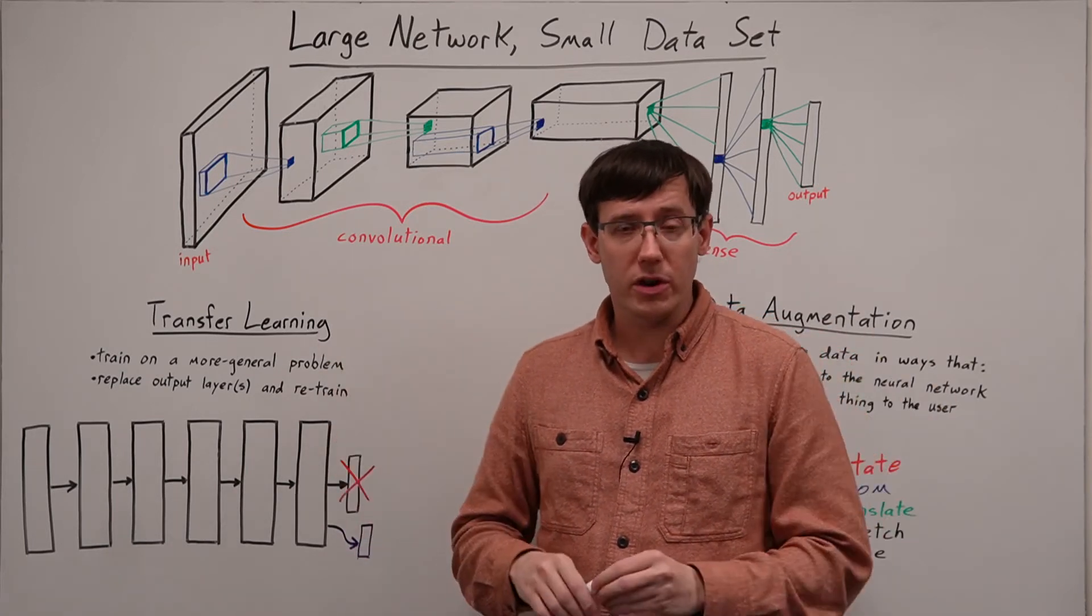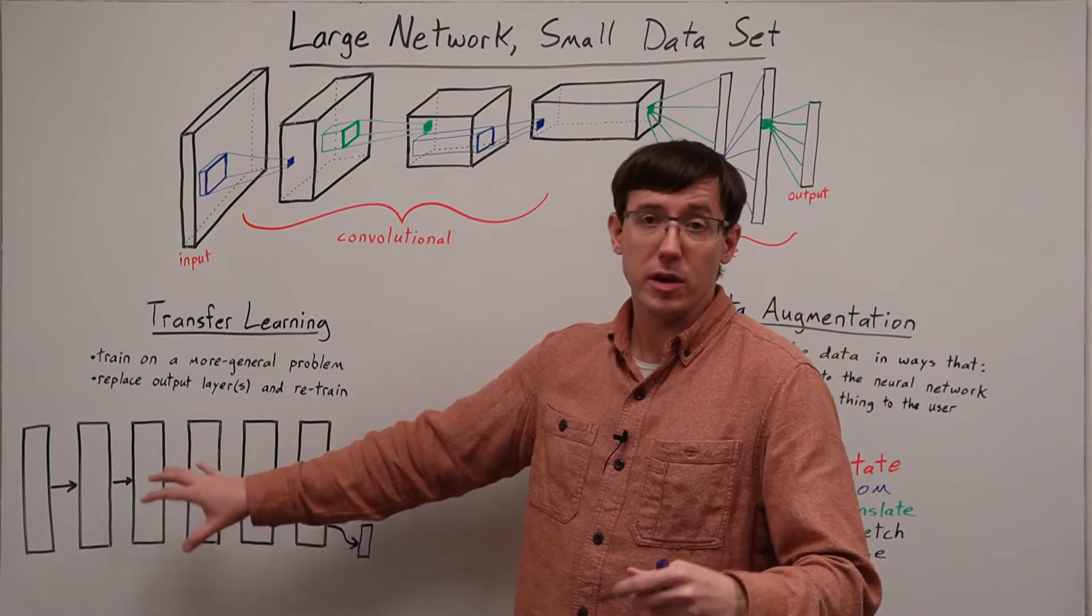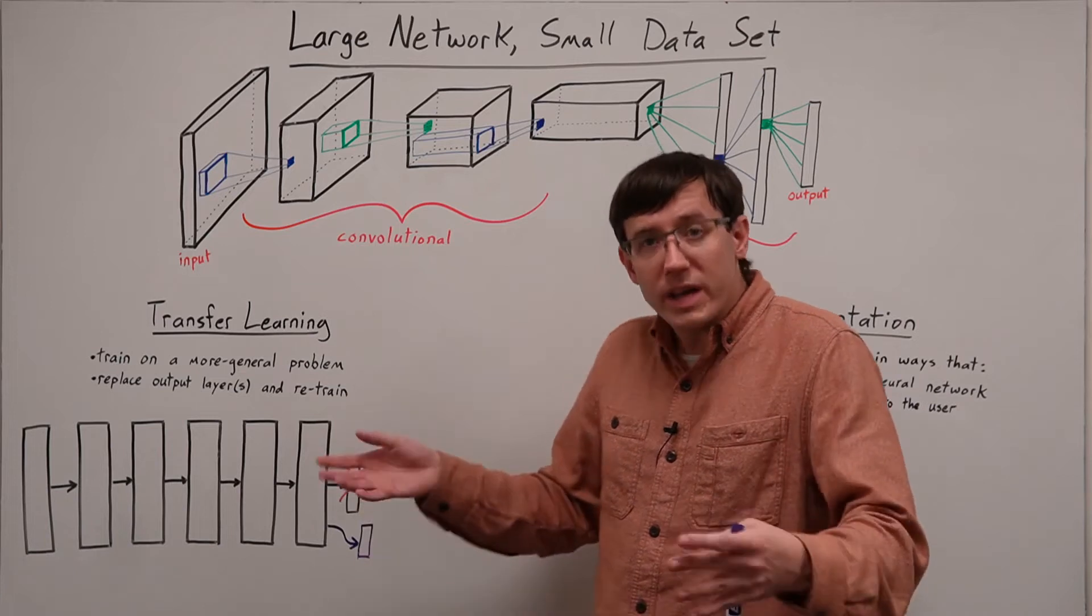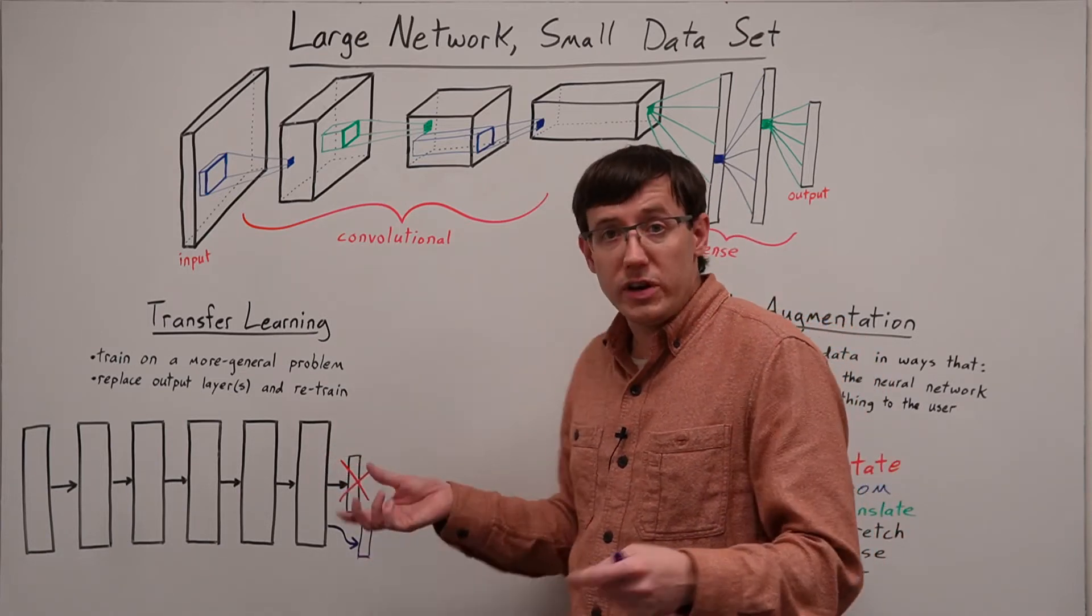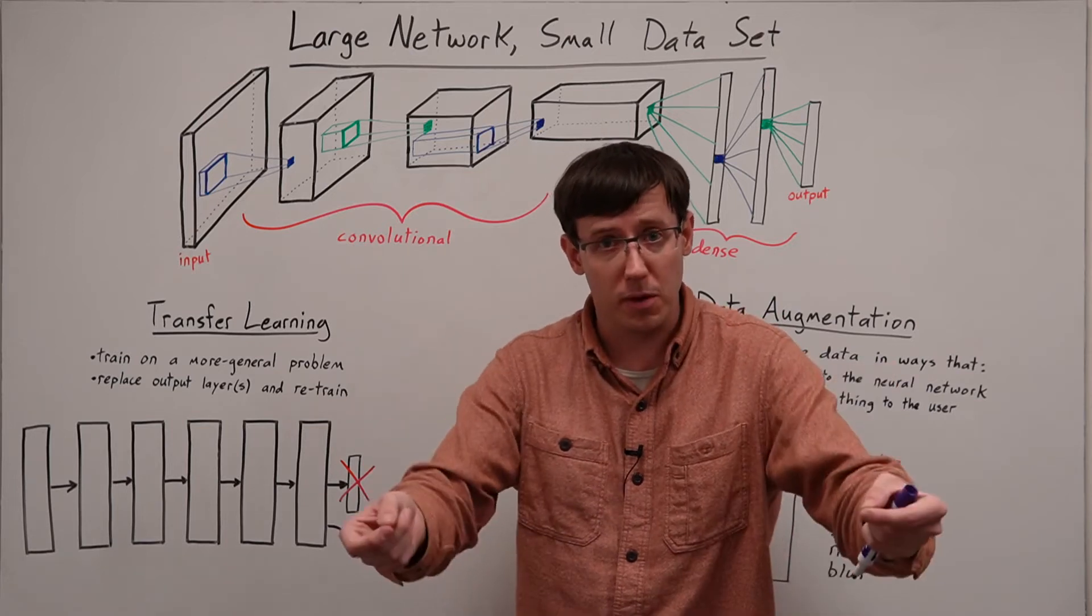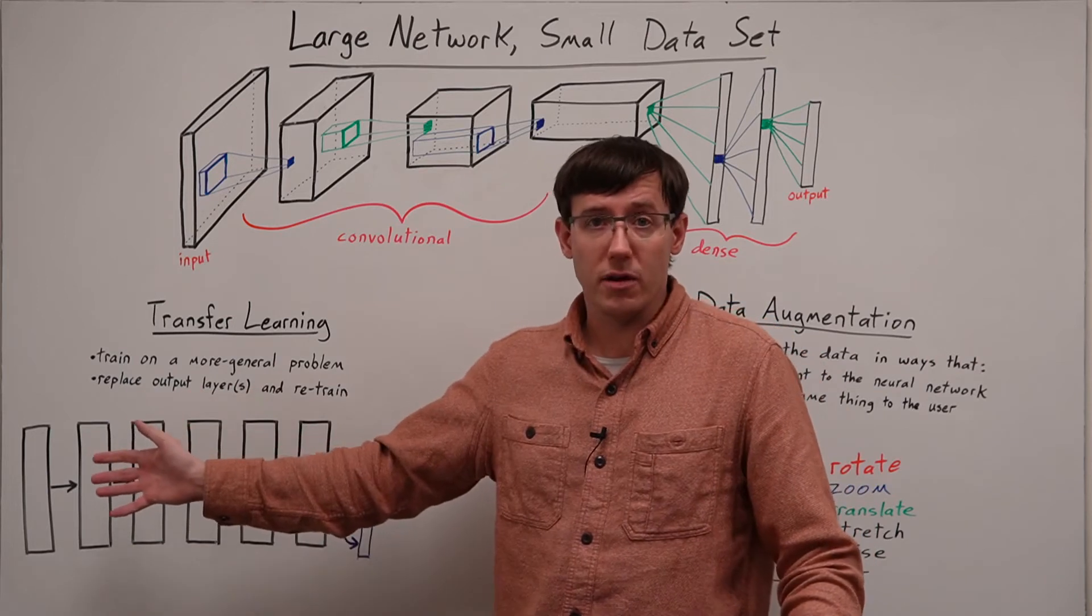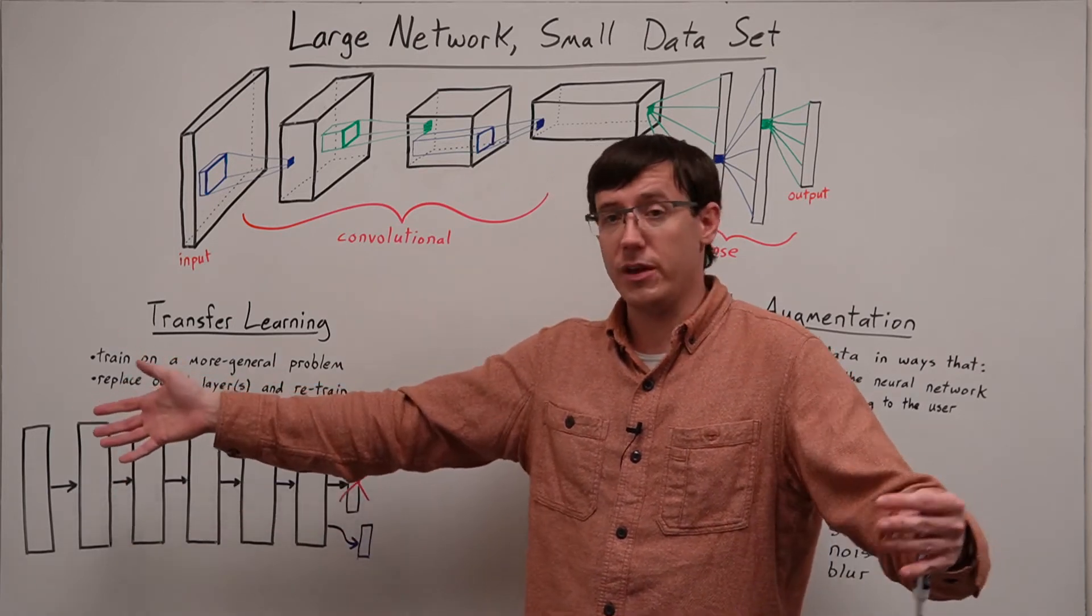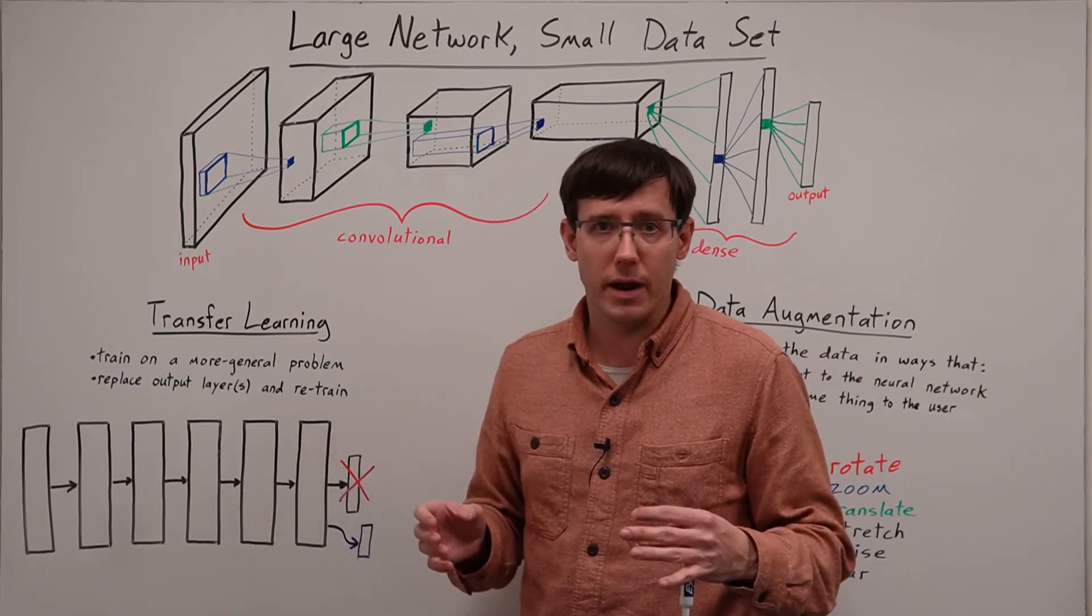When doing transfer learning, we generally have some options for how to use the pre-trained model. We definitely have to throw away its output layer because the outputs need to match up with our problem. But if we wanted, we could also throw away other layers of that model if we think that the useful preprocessing has been done earlier in the network.